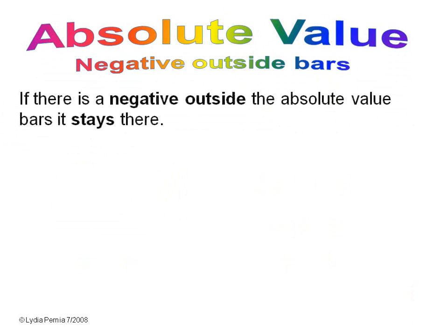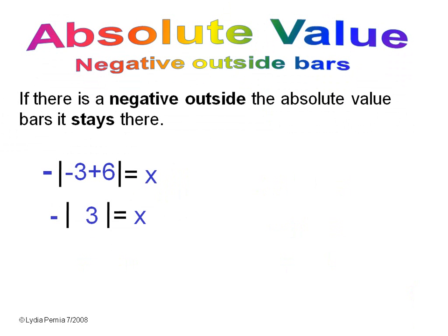Always remember that if there is a negative outside the bars, it stays there. You do what's inside first. Negative three plus six is three. The absolute value of three is three, but you have a negative outside, so the answer to this problem is negative three.